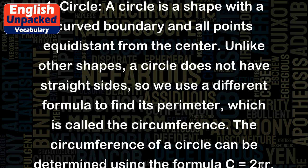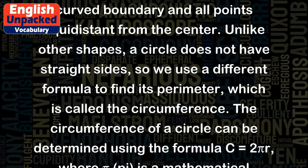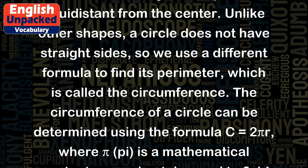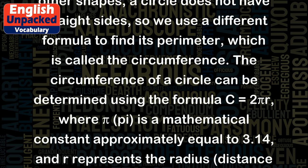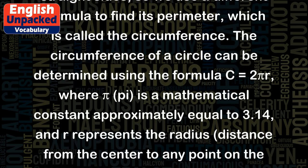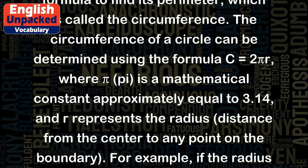a circle does not have straight sides, so we use a different formula to find its perimeter, which is called the circumference. The circumference of a circle can be determined using the formula C equals 2πr,